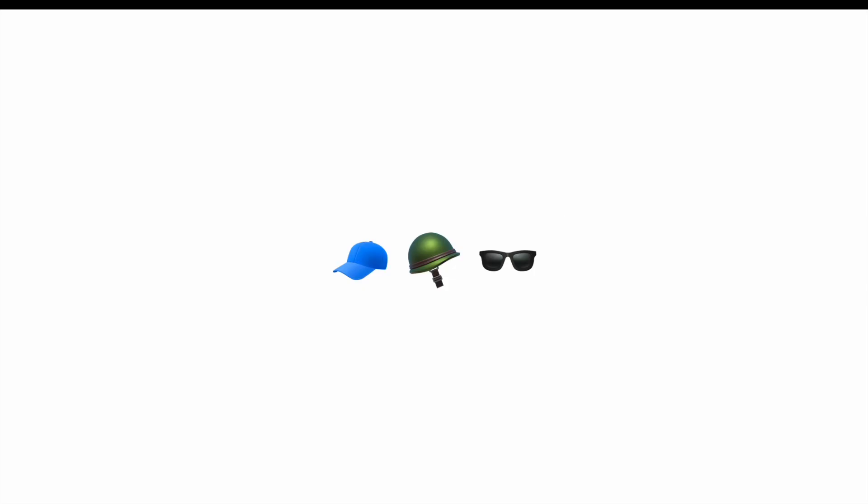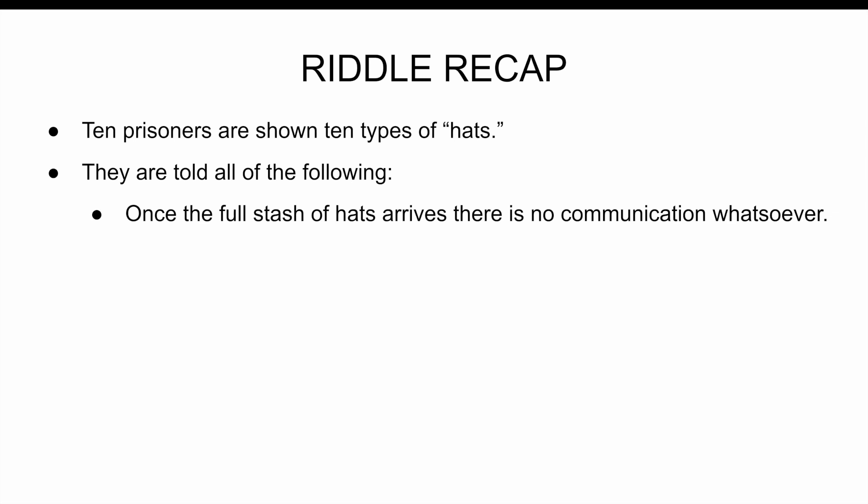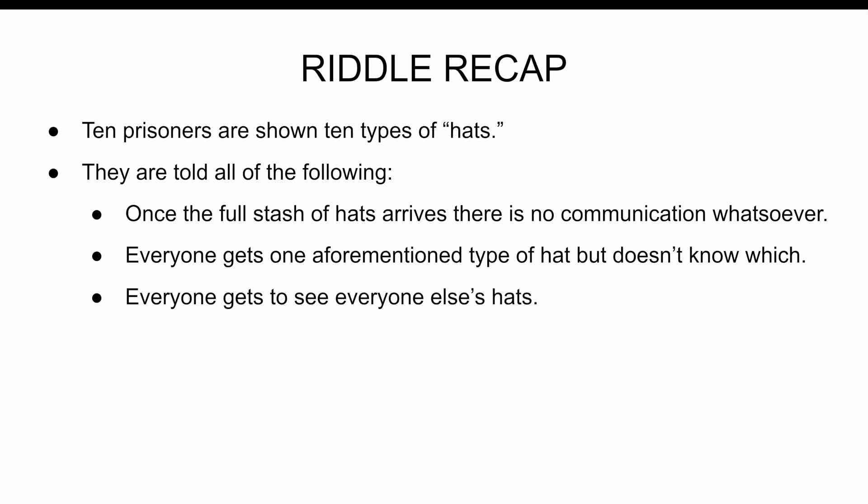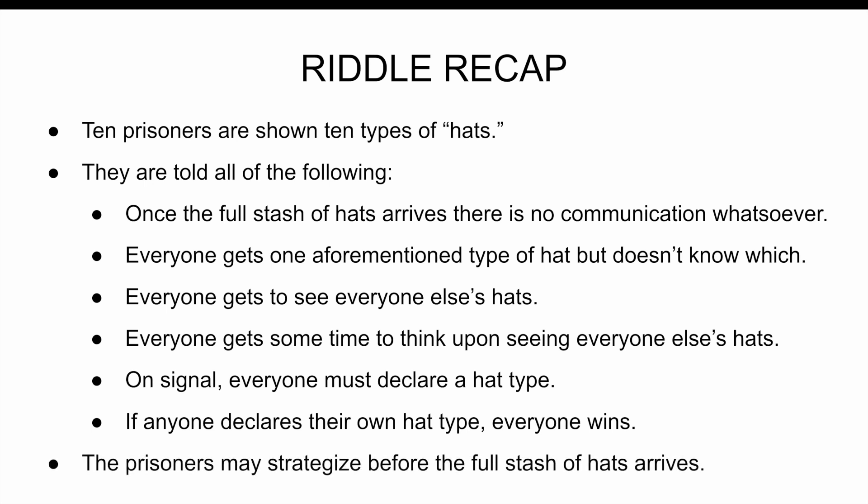In minor detail, I know you can tell the difference between wearing a cap, a helmet, and a pair of glasses. Just please suspend your disbelief and pretend they all feel exactly the same. There are only so many emojis I have to work with here. So here's the riddle in summary. Ten prisoners are shown ten types of hats. They are told all of the following. Once the full stash of hats arrives, there is no communication whatsoever. Everyone gets one aforementioned type of hat but doesn't know which. Everyone gets to see everyone else's hats. Everyone gets some time to think upon seeing everyone else's hats. On signal, everyone must declare a hat type. If anyone declares their own hat type, everyone wins. The prisoners may strategize before the full stash of hats arrives. What strategy could the prisoners use to guarantee their escape? I encourage you to pause and try to find a strategy on your own.